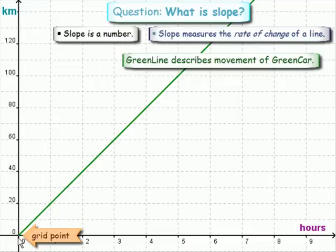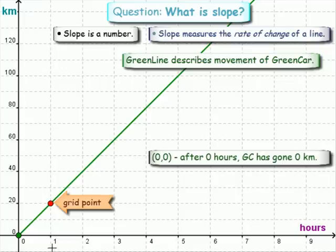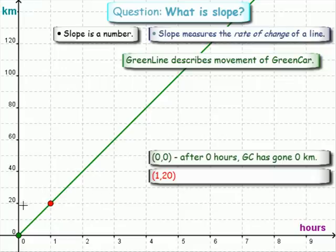What's the first such point? Zero zero. What does that point describe? That point says after zero hours, green car has gone zero kilometers. Not very exciting.